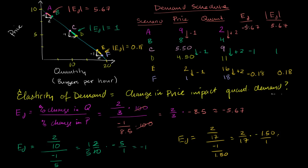If you don't think about absolute value, you get a negative number because this is a downward-sloping line. But if you focus on the magnitude, it's a relatively large number — a relatively large percent change in quantity relative to percent change in price. This comes from the fact that quantities are low here, so moving two units on a low base gives a large percentage change in quantity, while prices are high, so a $1 change isn't that large a percentage. When the absolute value of elasticity of demand is greater than one, this region is called elastic.